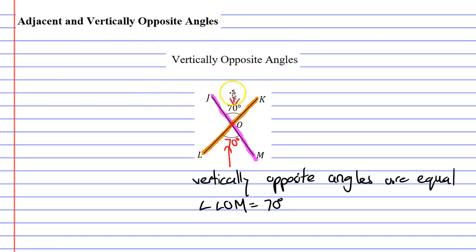Not only are the angles above and below equal to each other, but the angles on the sides — angle JOL and angle KOM — are also equal to each other. They would both be 110 degrees each. That concludes our video on adjacent and vertically opposite angles. In the description below, you will find worksheets with questions related to this video.